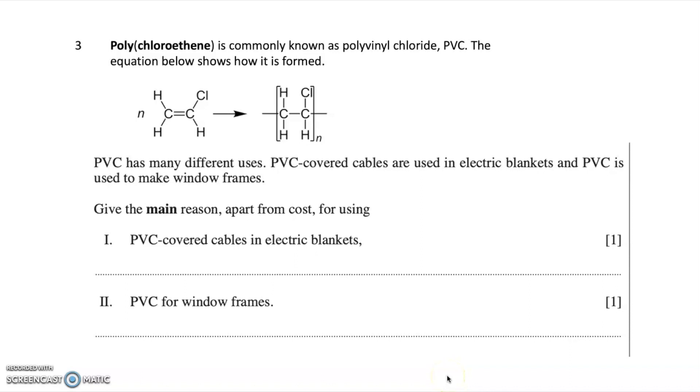Now in question three, it focuses on a different addition polymer, polychloroethene, which is commonly known as polyvinyl chloride, PVC. And they've drawn an equation to show how it's formed, so you can see the structure of PVC. Now PVC has many different uses. PVC-covered cables are used in electric blankets, and PVC is used to make window frames. And the question asks, give the main reason, apart from cost, for using PVC-covered cables, first in electric blankets. Well, it's because it does not conduct electricity. So there's one mark if you said it doesn't conduct electricity, or it's an insulator.